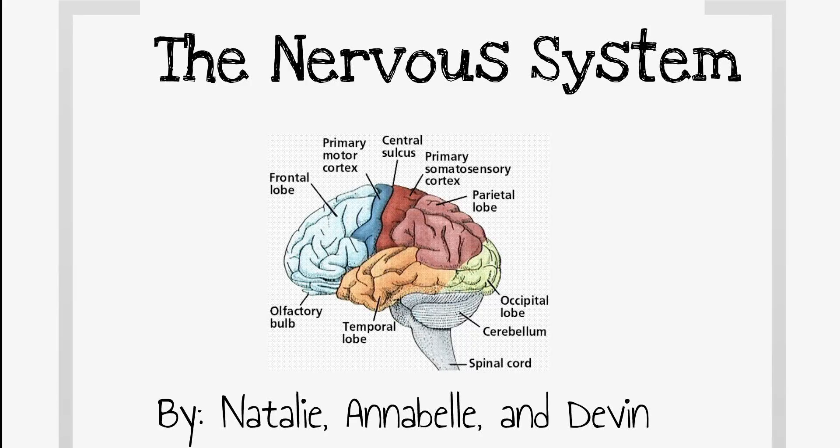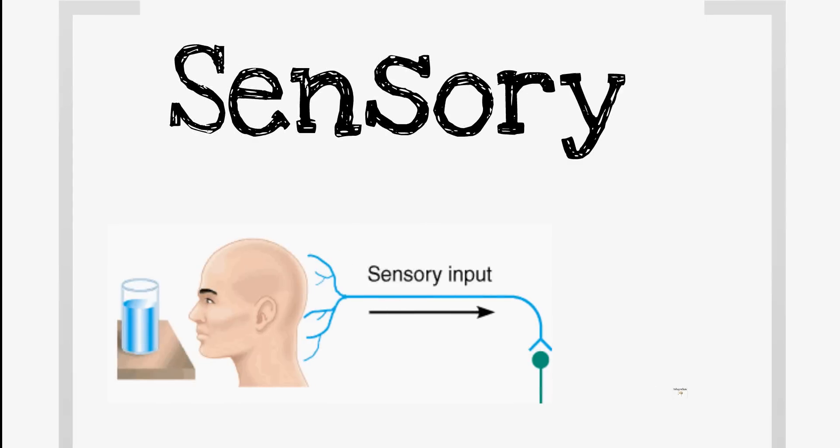Nerves, they are called neurons and there are just three types. Sensory is the first, has receptors, they respond to stimuli.